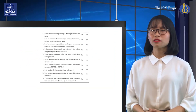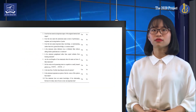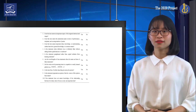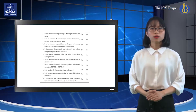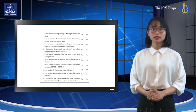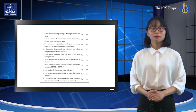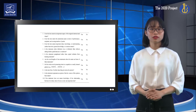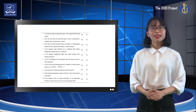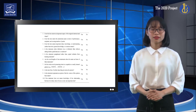Now we move to the criteria to evaluate true-false questions. There are 10 points listed on the slide. Please refer to them as you finish your test items to ensure the quality of the questions. That's all about some main features of close-ended questions, particularly multiple choice questions and true-false questions. Thank you very much for watching. Goodbye.